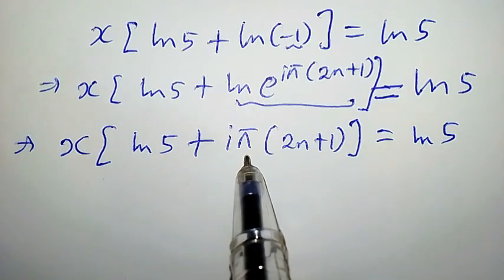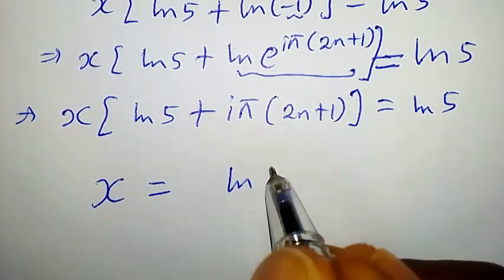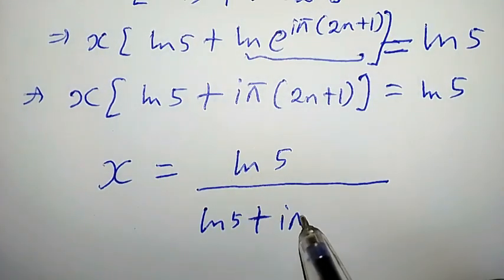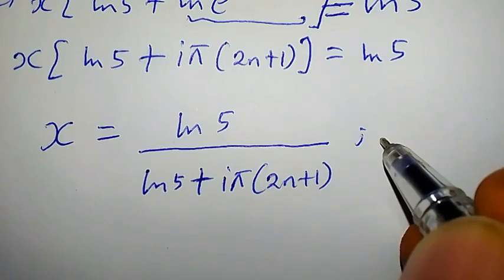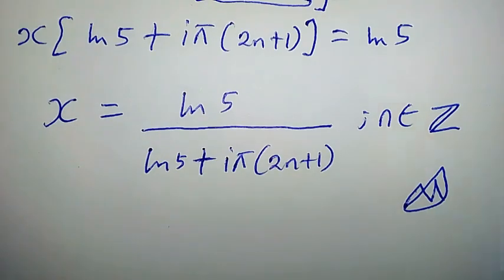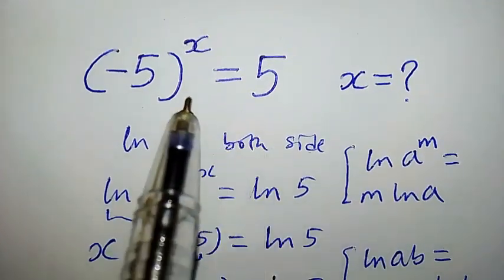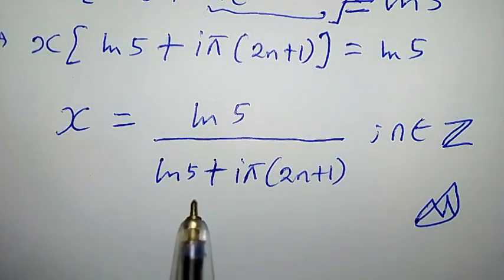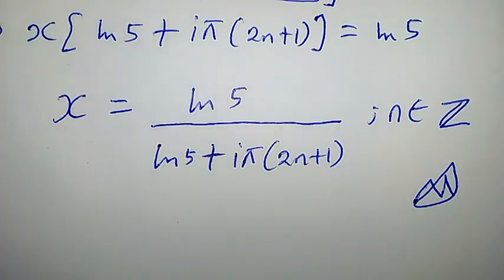Now let us divide both sides by [ln(5) + iπ(2n+1)]. Doing that, we get x = ln(5) / [ln(5) + iπ(2n+1)], where n belongs to the set of integers. This is the required solution for this challenging math problem: (-5)^x = 5. Thanks for watching.